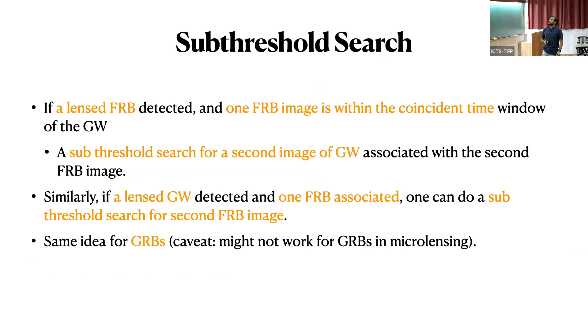I'll just skip this part in the interest of time. We can do something, this was the strong lensing scenario when both FRB as well as the gravitational wavelength is very small compared to the size of the lens, which is galaxy. In that scenario, suppose if you see a lensed FRB and you see one FRB image within the coincident time window of the gravitational wave, you see only one image, then you can search for the second sub-threshold image of GW. And similarly, you can do vice versa also. The same idea can work for GRBs as well.